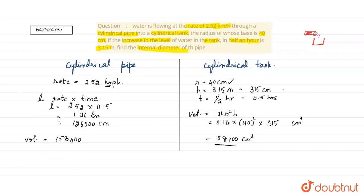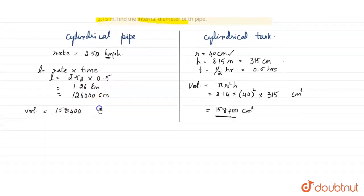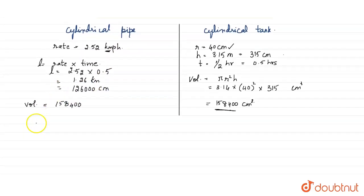The formula for volume in the cylindrical pipe is πr²h. Let the radius be r. So π × r² × h = 158,400. Using π = 22/7, we have (22/7) × r² × 126,000 = 158,400.